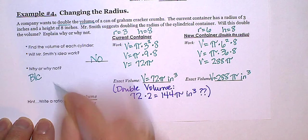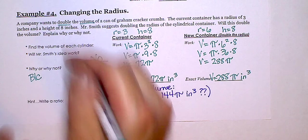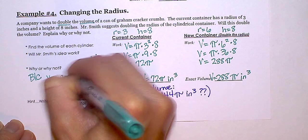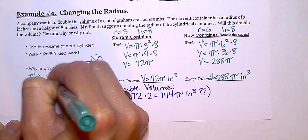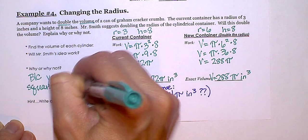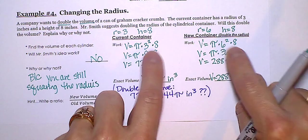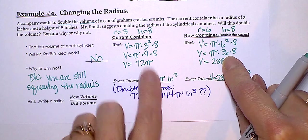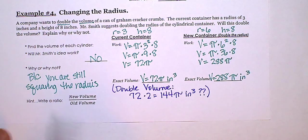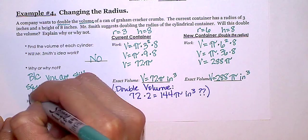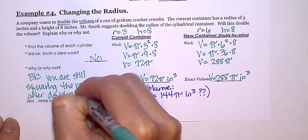Because you are still squaring the radius. So yes, we did double the radius. But then in the formula, we have to square it, which made it a little too big. So because we still have to square the radius after doubling it. So nope, it won't work.